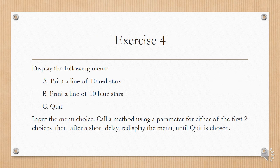Exercise 4, display the following menu, print a line of 10 red stars, that was A, B is print a line of 10 blue stars, and C is quit. Input the menu choice, call a method using a parameter for either of the first two choices, that's A or B, and then after a short delay, redisplay the menu until quit is chosen.